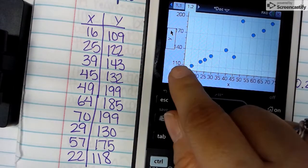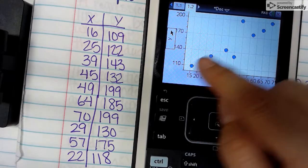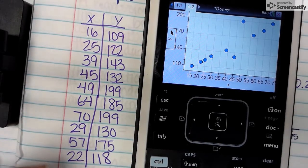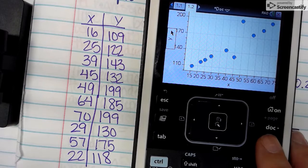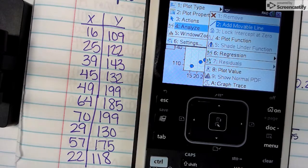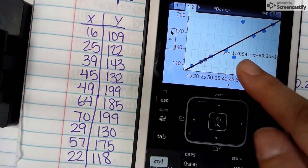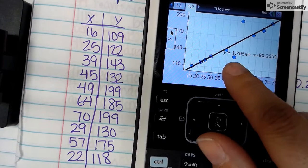So these dots appear to be basically climbing from left to right, so it is a positive linear correlation. They basically look like a line. We want to check to see what the regression equation would be, so we're pushing Menu, going to 4 for Analyze, 6 for Regression, 1 for Linear. That will draw the line and show us what the equation is.